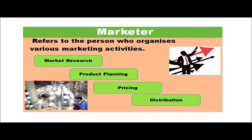The next term is marketeer. It refers to the person who organizes various marketing activities like market research, product planning, pricing, and distribution. The person who conceives what to produce through marketing research, plans the product, prices it, and is involved in distribution to consumers is called the marketer.